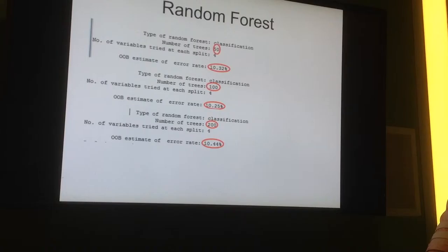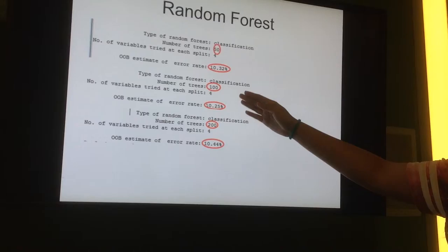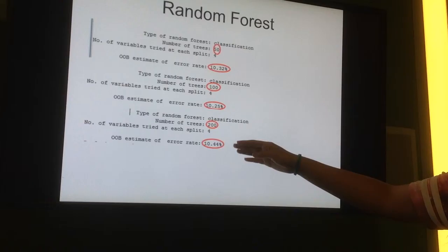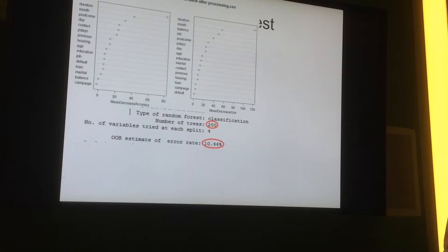And the last one is random forest. For random forest, we set a different number of trees: 50, 100, and 200. We can see from 50 to 100, the errors are going up or going down, and from 100 to 200, the errors are going up. So we set the number of trees at 100. And there are two variable importance plots, which are mean decrease accuracy and mean decrease Gini.